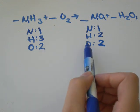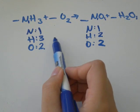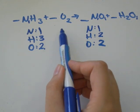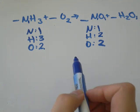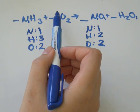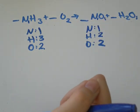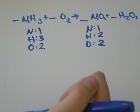So right now my oxygen is balanced, but my hydrogen is not. My nitrogen is. And so we need to add some coefficients in front of our molecules so that it balances.